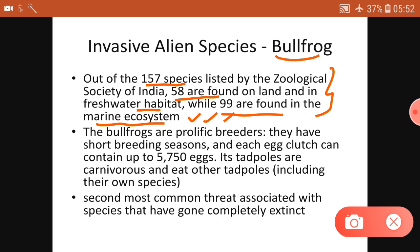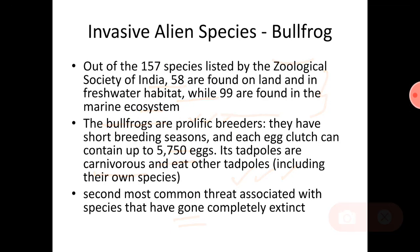Let me come to the bullfrog. This is a prolific breeder with a short breeding season — an egg clutch can have up to 5,750 eggs. You can imagine how many are produced at a time. The tadpoles are carnivores; they eat other tadpoles and other species. The second most common threat associated with species becoming extinct is due to invasive alien species.